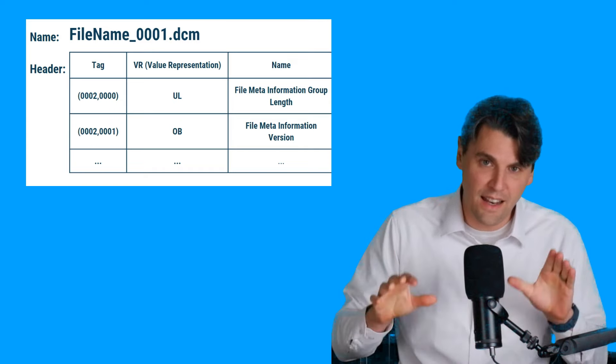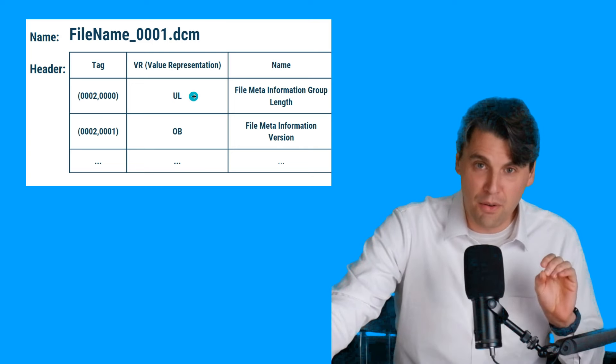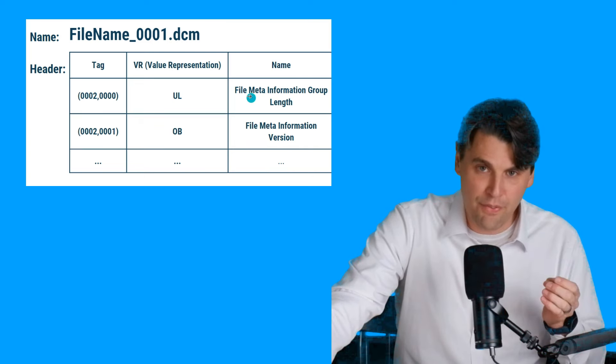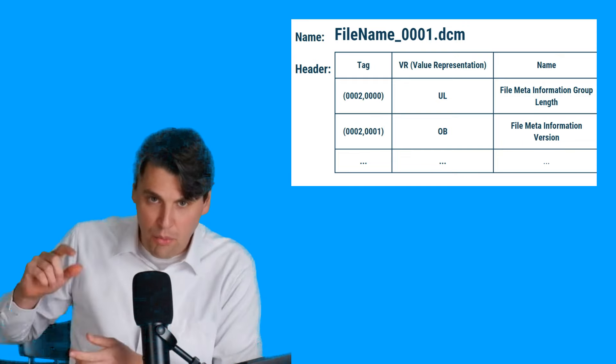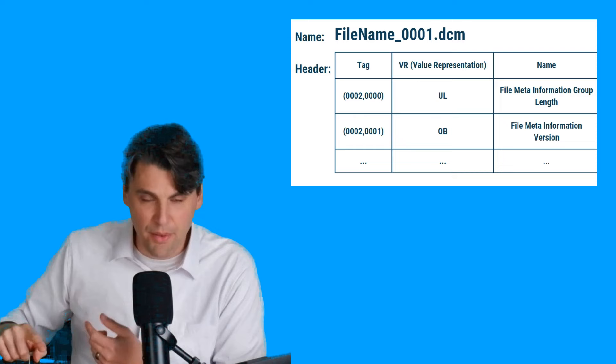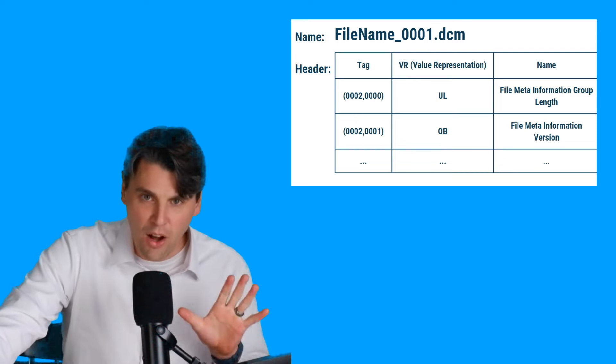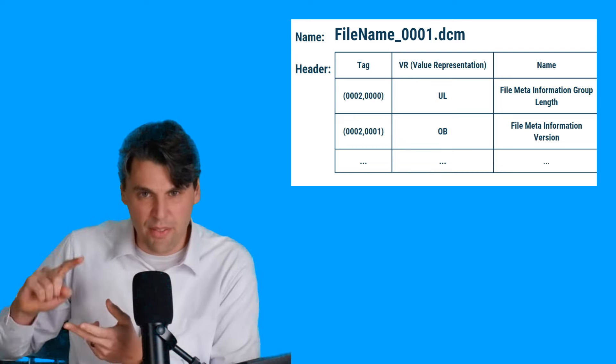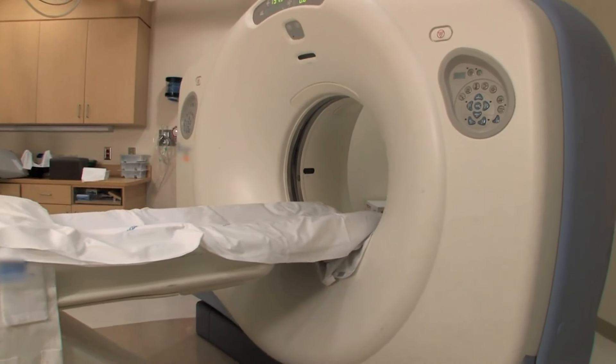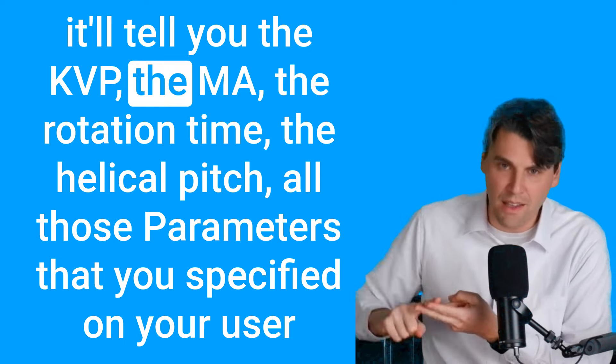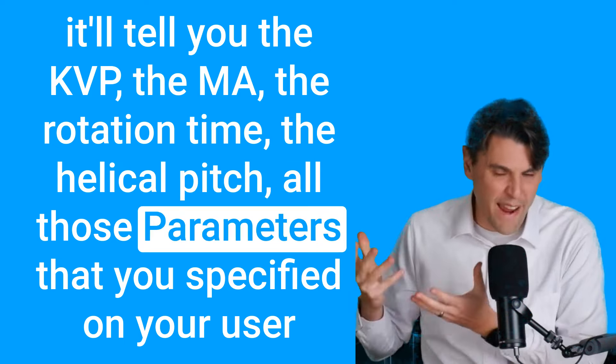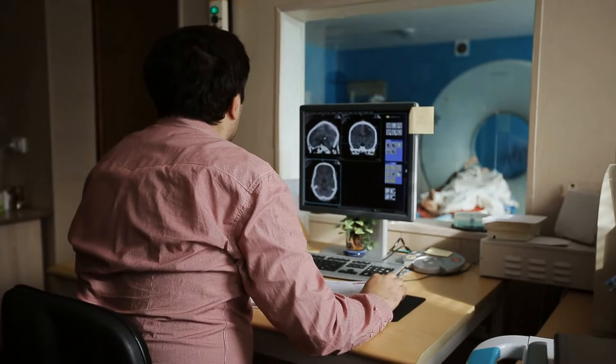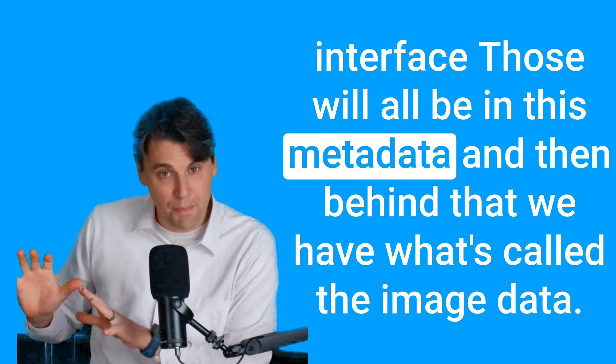The tags then have something called a value relationship, and then the actual data from a given field. So then after that header information, which tells us about the type of scanner it was taken on, and all of those goodies about the parameters. So if it's a CT scan, it'll tell you the KVP, the mA, the rotation time, the helical pitch, all those parameters that you specified on your user interface. Those will all be in this metadata.